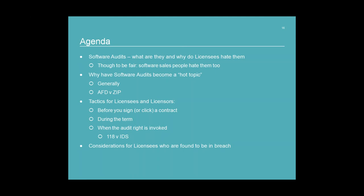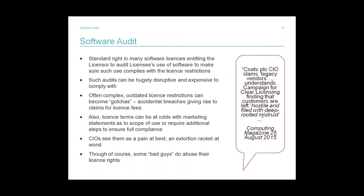At the end I will talk about what to do if you have breached — and that will be quite licensee-focused. But if you're a licensor, it's good to know what the other side is up to. So, software audit — what is it? It's a standard right to allow software owners to audit what's being done with their software. If you own something and let someone else use it but don't give it away, you ought to have a right to check what's being done with it. Typically, software is licensed and priced based on how it is used — whether it's the number of individual users, machines, countries, or servers. So it is completely fair that software owners should have a right to check those license restrictions. But already it's getting quite complicated, and one of the big issues is just how complicated license restrictions are.